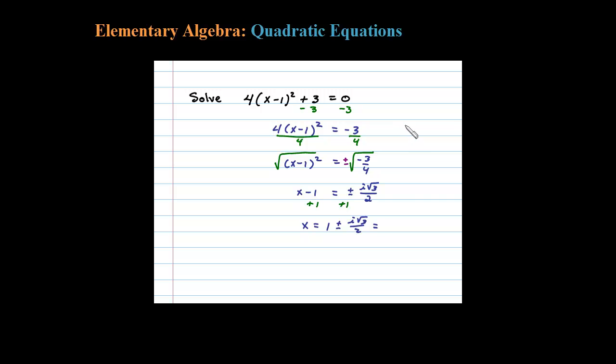Complex numbers always look like a plus bi, so I'm going to rewrite this as 1 plus or minus square root of 3 over 2 times i. So in the back of the book you'll probably see your answer looks like this.